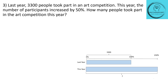Let's look at the bar model. The base value will be the number of people who took part last year, which is 3300 — that will be your 100%. This year there is a 50% increase, which means this year the number of participants has become 150% compared to last year. Since we are comparing with last year, last year becomes 100% and this year becomes 150%.